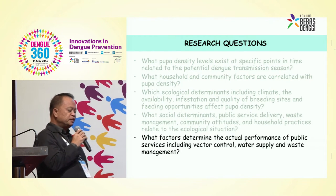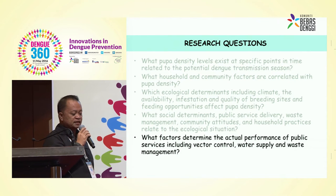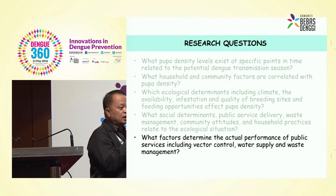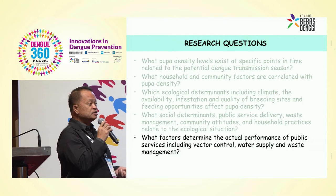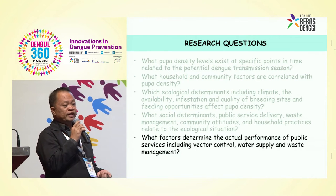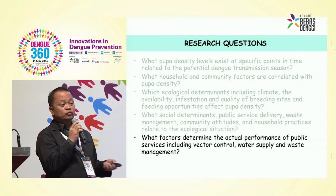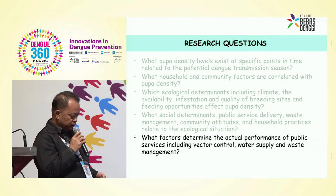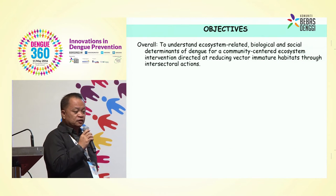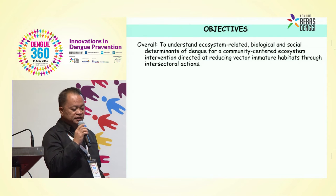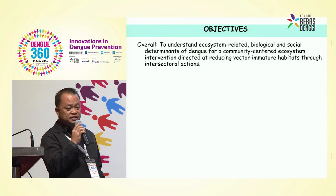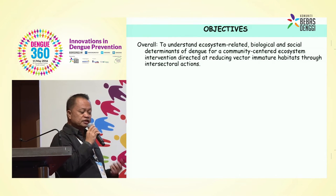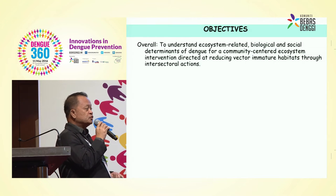The last research question would be: what factors determine the actual performance of public services including vector control, water supply, and waste management? In this study, we'll try to put together as comprehensively as possible what determinants would affect control of dengue in terms of vector density, because during that time we know that vaccine was not yet available, so it was still vector control which we relied on. The objectives of the study would be, number one, to understand the ecosystem-related biological and social determinants of dengue for a community-centered ecosystem intervention directed at reducing vector control immature habitats through intersectoral actions — so what we want to develop here is a community-based control program.